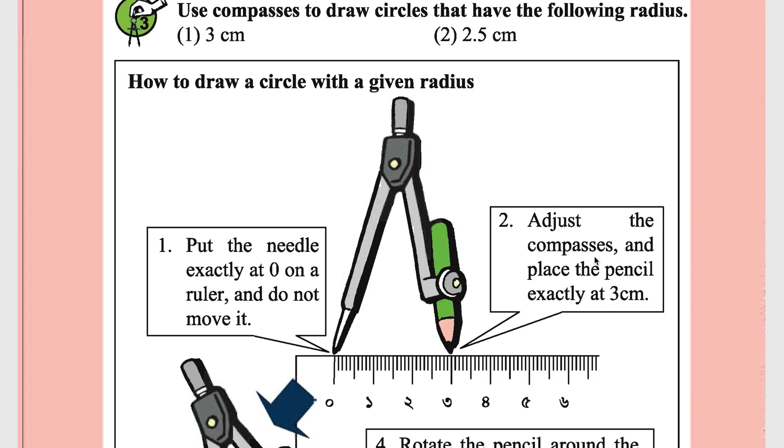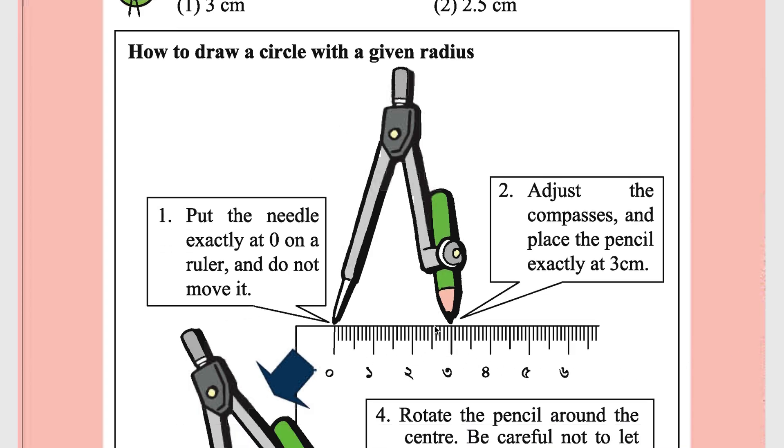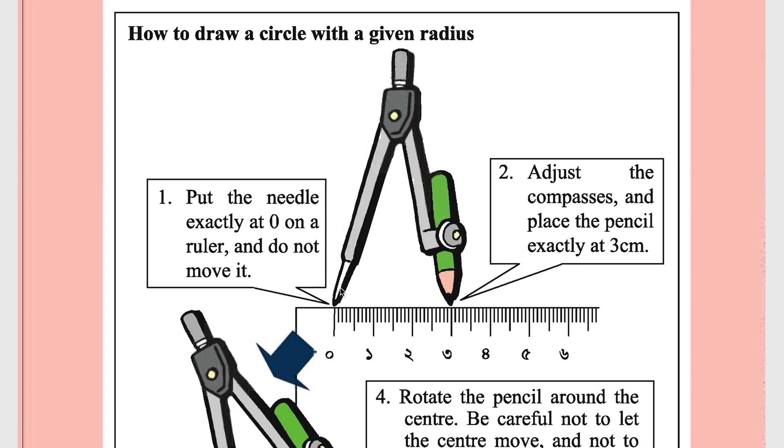Now, if you need to draw a circle with a given radius, let's say 3 cm, measure 3 cm on the scale like this. Put a needle at 0 and pencil at 3 cm.